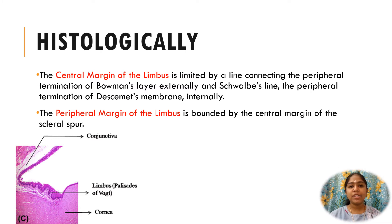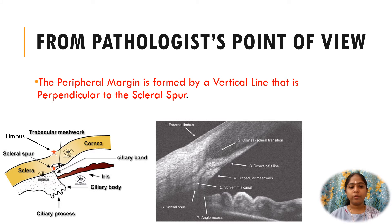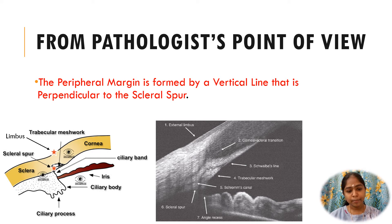The peripheral margin of the limbus is bounded by the central margin of the scleral spur. From a pathologist's point of view, the peripheral margin is formed by a vertical line that is perpendicular to the scleral spur. You can clearly see the limbus being perpendicular to the scleral spur in the diagram.